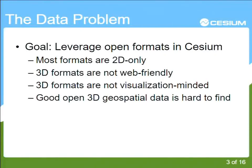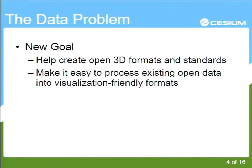Good open 3D geospatial datasets are kind of hard to find. You can trace maps and add footprints to OSM, but you can't trace a three-dimensional building from imagery and get heights and roof details and all the other things you'll see in the demo. So we got pulled kicking and screaming into a new goal: help create open 3D formats and standards, and also take existing standards and make it easy to process this data into visualization-friendly things.